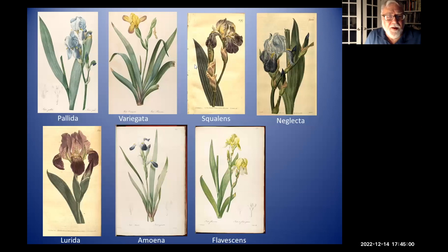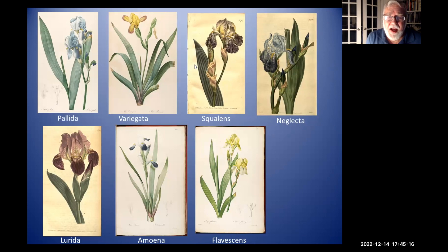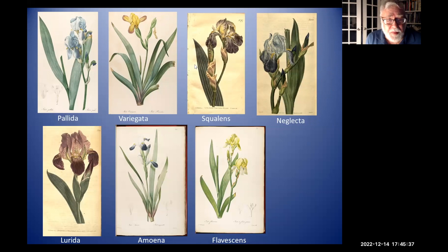One thing Foster looked at was that at the time almost all tall beardeds when he first started were diploid, essentially pallida and variegata crosses. Many other irises named as species - like squalans, lurida, amina, and flavessens - were all called species at the time, but he proved through his experimental crosses that they were really crosses between pallida and variegata. Foster was unique in being one of the first experimental taxonomists by creating a theory and then testing it by crossing plants and seeing what happened.